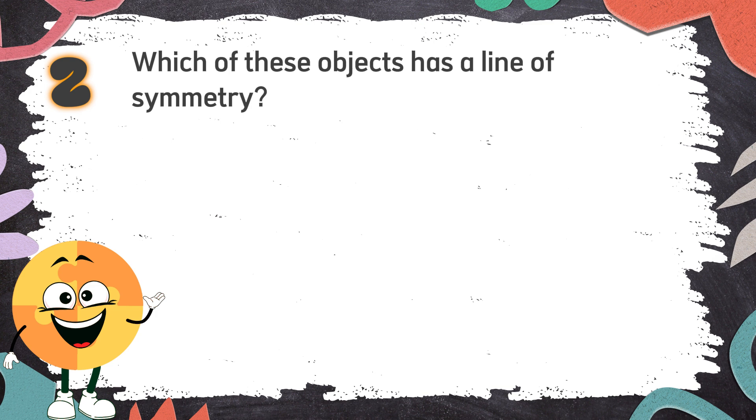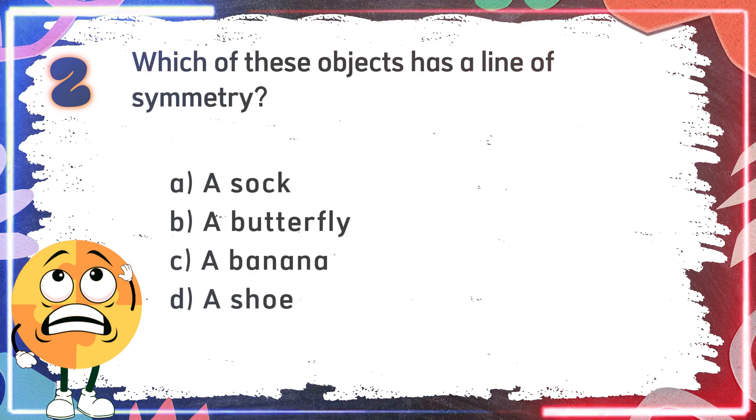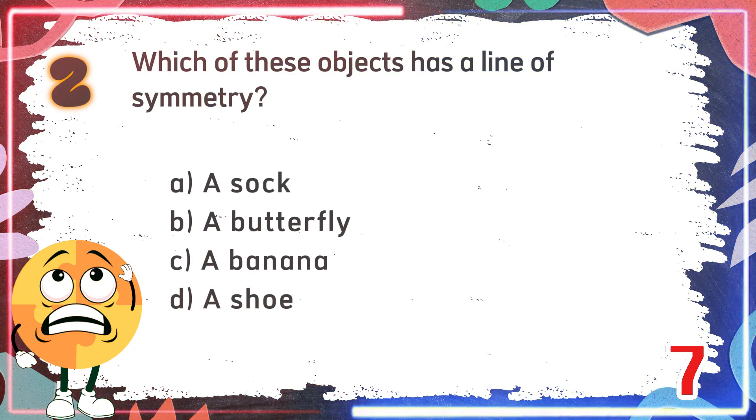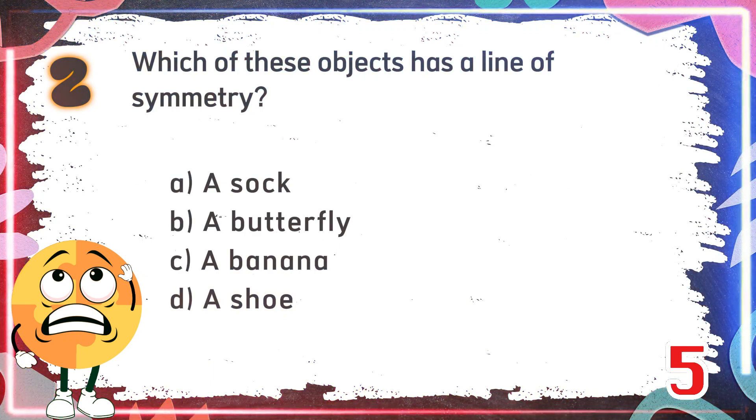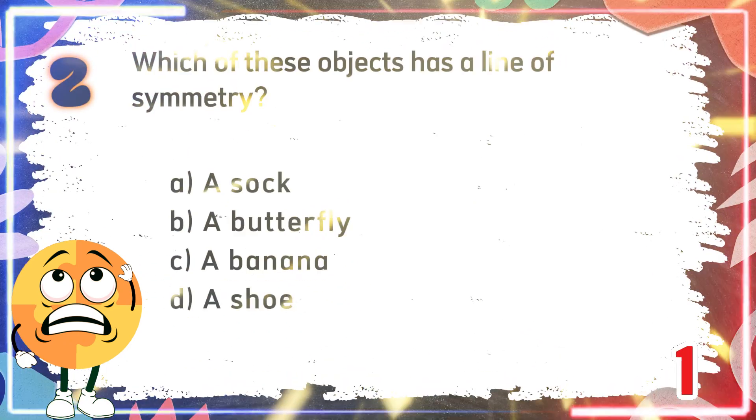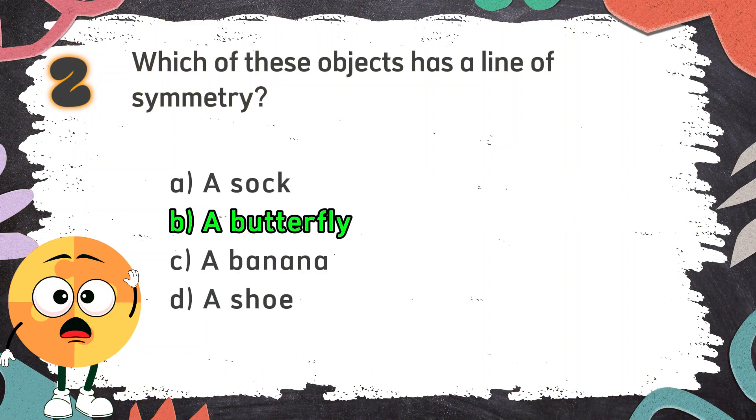The correct answer is C. Octagon. Number 2: Which of these objects has a line of symmetry? The choices are A. A sock, B. A butterfly, C. A banana, D. A shoe.